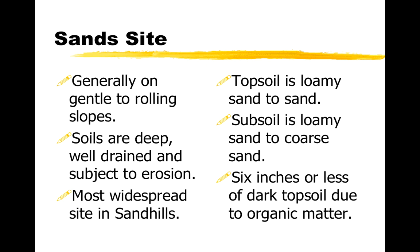Next, we'll move into three sites that have sand in the topsoil as a main feature. These sites have a gritty surface soil — sand. The sand site is the first one. This is the most common one throughout the Sandhills. These are gentle rolling slopes. Soils are going to be really deep, but if not protected, they erode easily. The topsoil can be a loamy sand — maybe a little bit of finer textured silt or clay mixed with sand, but mostly sand — and the subsoil usually gets to be really coarse sand. The most important identifying feature is that there are six inches or less of dark topsoil due to organic matter.